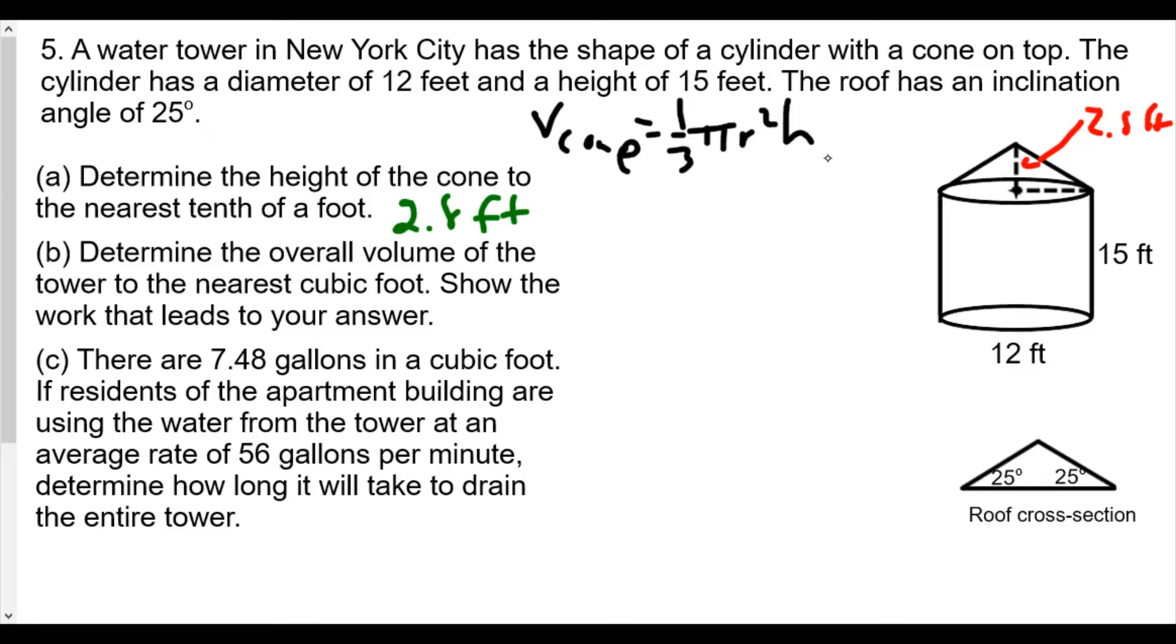We'll find the volume of the cylinder. I'm going to leave everything in terms of π and then add together. We have one-third times π times the radius, which is going to be 6 squared, times height which is 2.8.